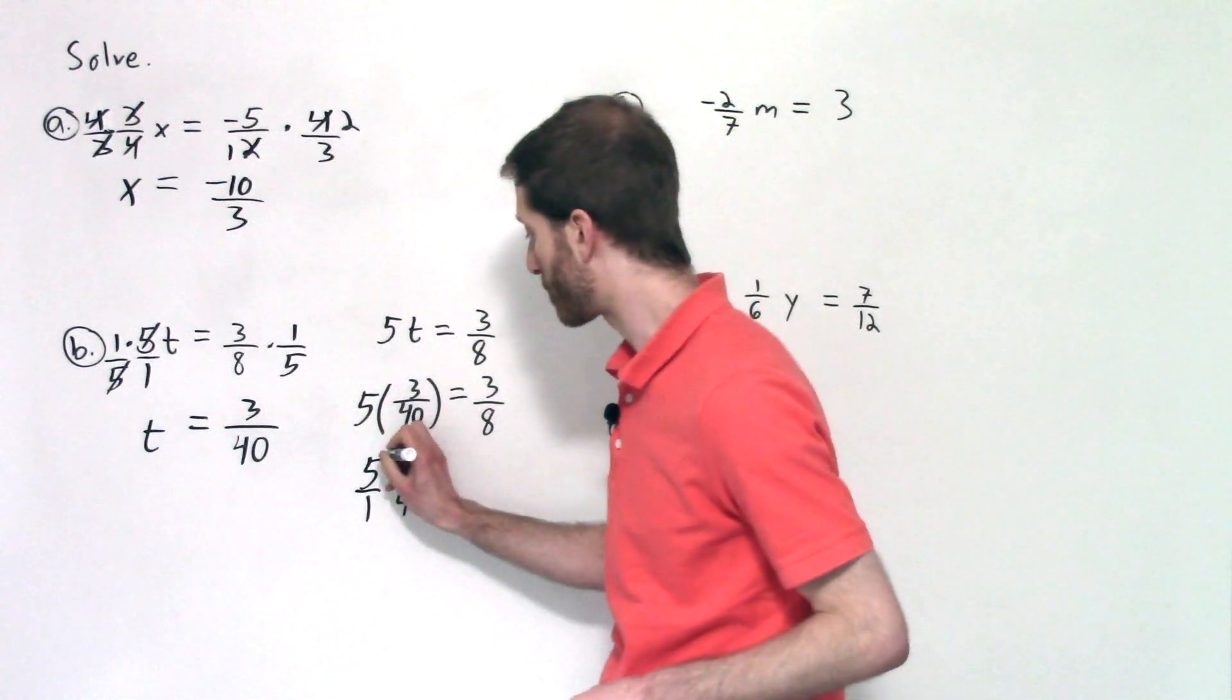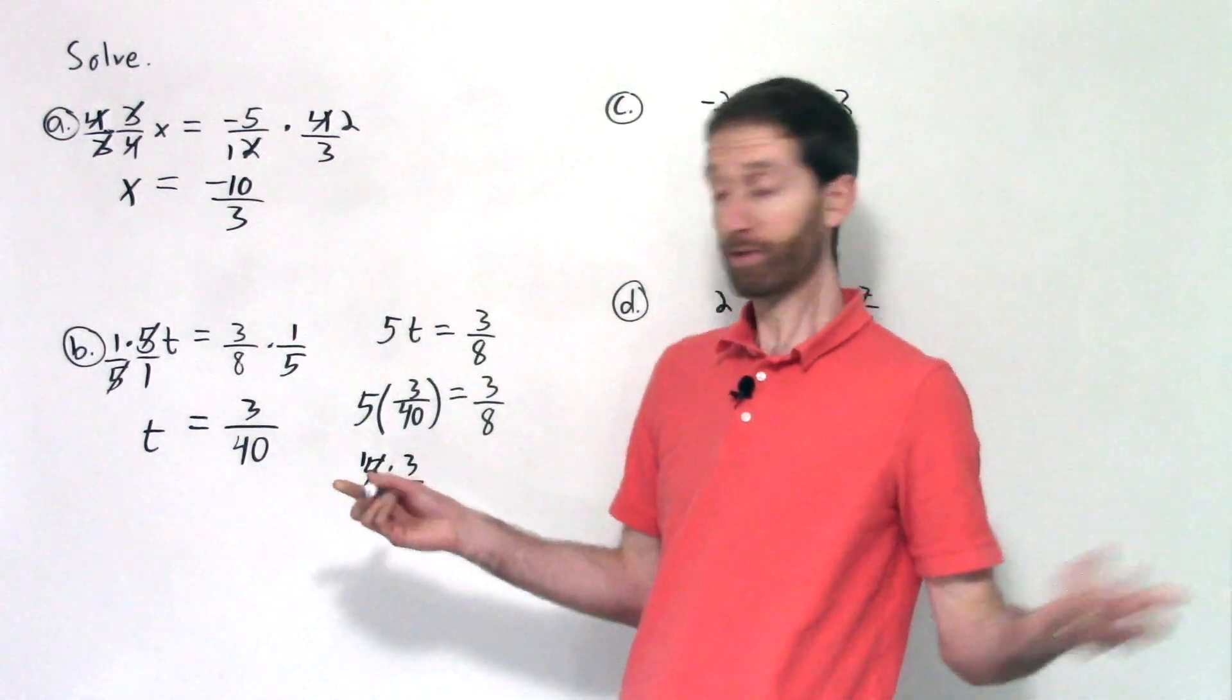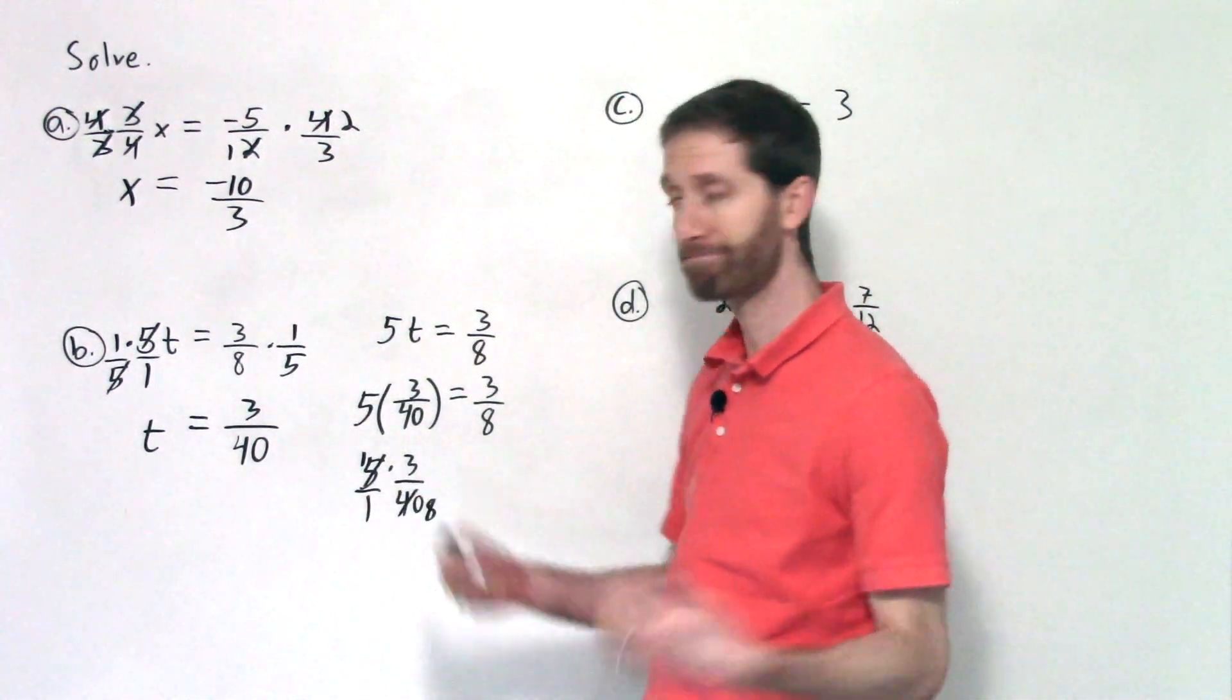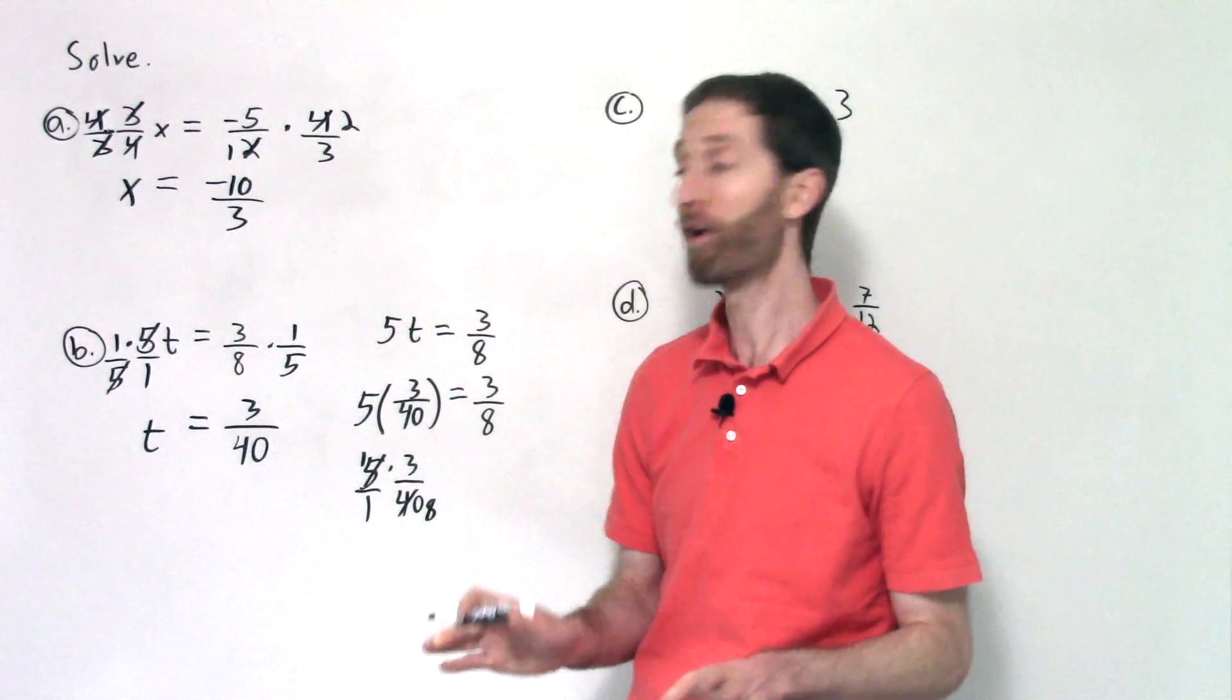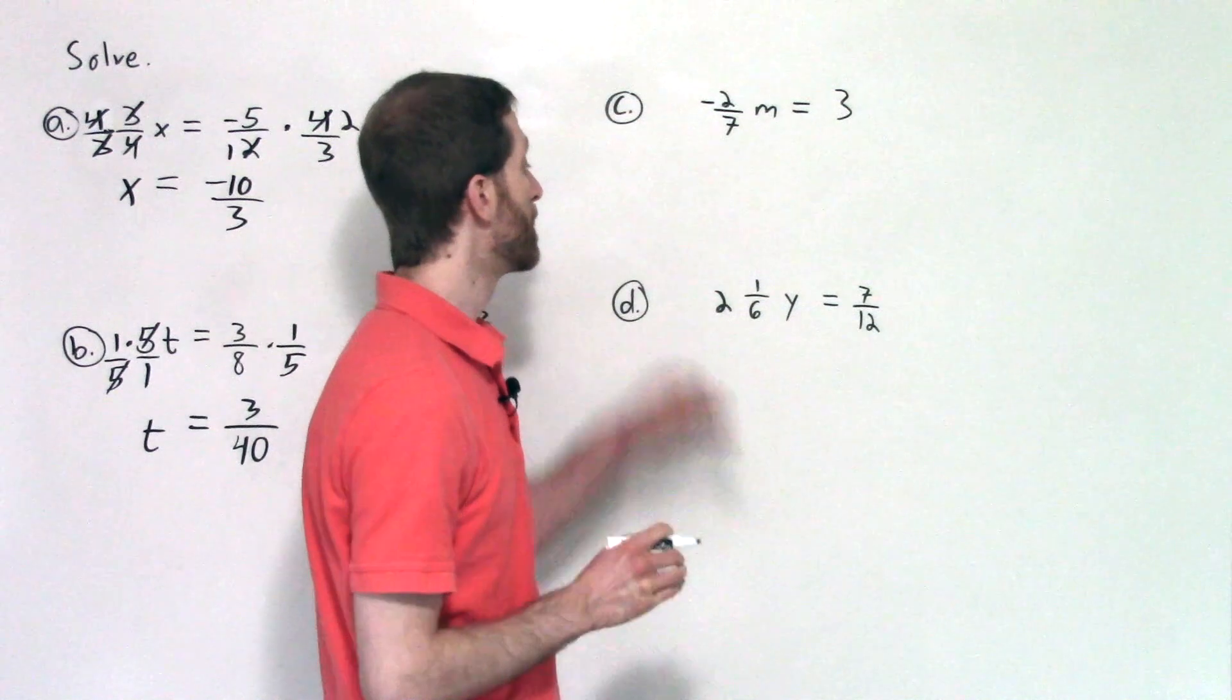That's five over one. And so five goes into itself once and into forty eight times. And now I'm left with three-eighths. One times three is three. One times eight is eight. Check mark. So that all of this was just a check. Remember, you can do that with any equation once you get your final answer. All right.